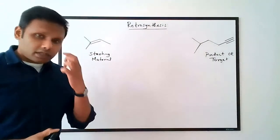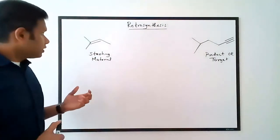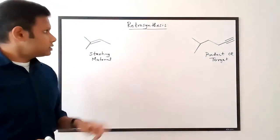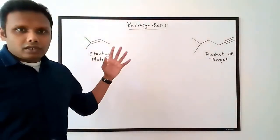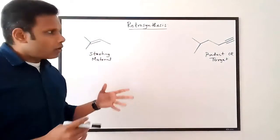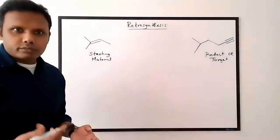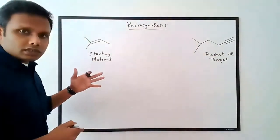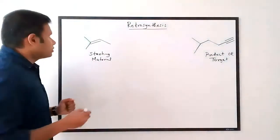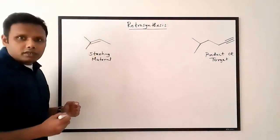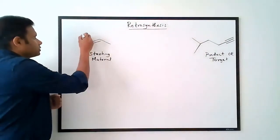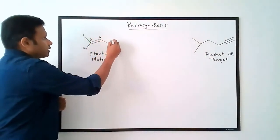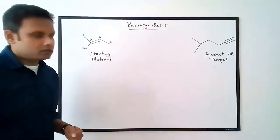In approaching problems like these, the very first thing you want to ask yourself is: is there a change in the number of carbons, or is there a change in the carbon skeleton? To help with this process I'm going to number the carbons. If I number my starting material, I have one, two, three, four, and five carbons.